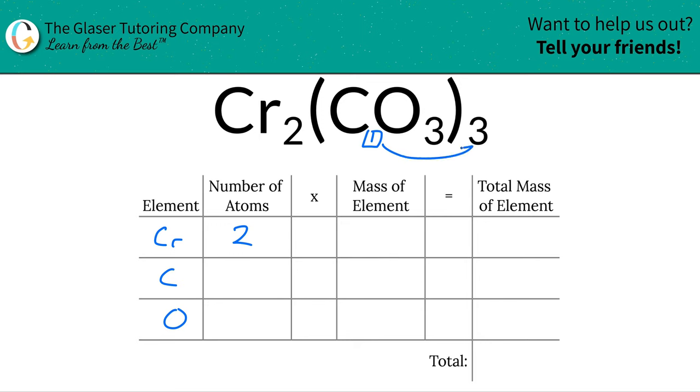In other words, take the subscript of carbon, multiply it by the outer subscript to find the total. And then same thing for oxygen. Take oxygen's subscript, multiply it by the outside, so that's a total of nine oxygens. Nice and simple.